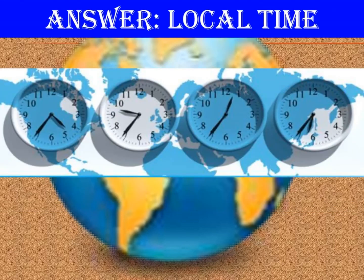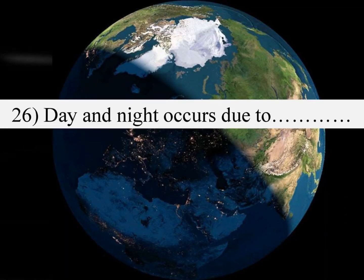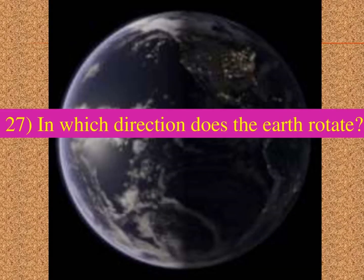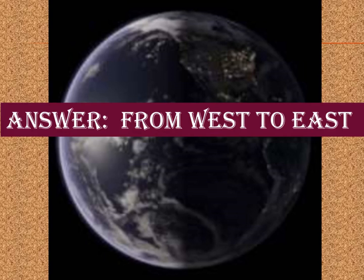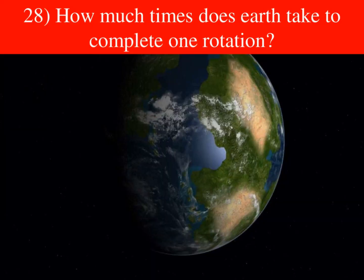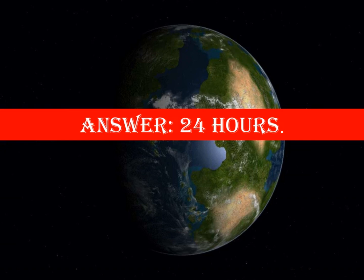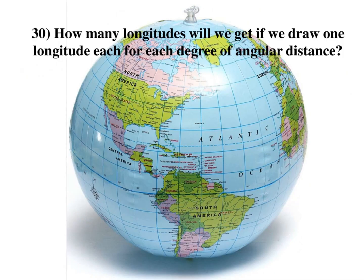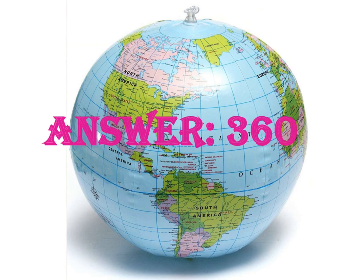The time estimated at each place based on the position of the Sun is termed as local time. Day and night occur due to the rotation of the Earth. In which direction does the Earth rotate? Answer: From west to east. How much time does the Earth take to complete one rotation? Answer: 24 hours. What is the angular distance of the Earth? Answer: 360 degrees. How many longitudes will we get if we draw one longitude for each degree? Answer: 360 longitudes.